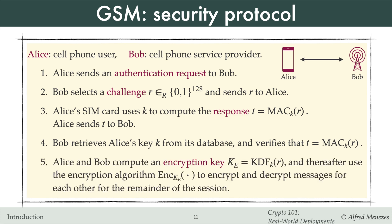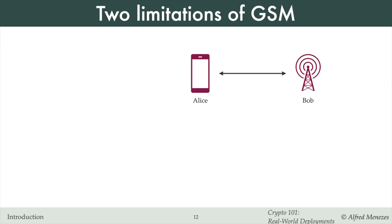Next, Alice and Bob compute an encryption key KE by applying a key derivation function to the challenge R using their shared secret key, and then use KE to encrypt and decrypt messages for the remainder of the session. GSM security is conceptually quite simple: Alice authenticates herself by correctly computing MAC tags for random challenges issued by Bob, and confidentiality is protected through symmetric key encryption. The main innovation of GSM is the way in which cell phone service providers securely distribute secret keys to millions of subscribers using SIM cards.